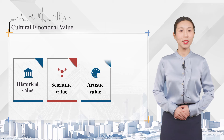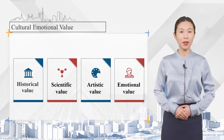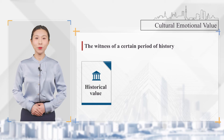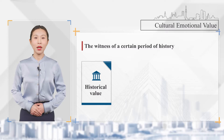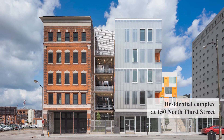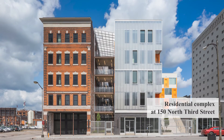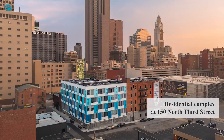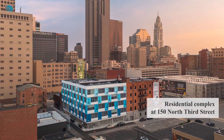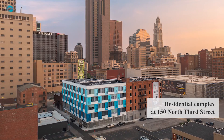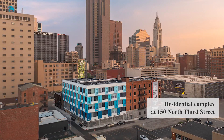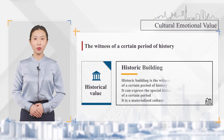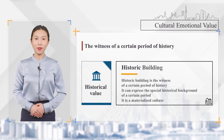The cultural emotional value is mainly composed of historical value, scientific value, artistic value, and emotional value. Historical value means a historic building is the witness of a certain period of history; it can express the special historical background of a certain period.